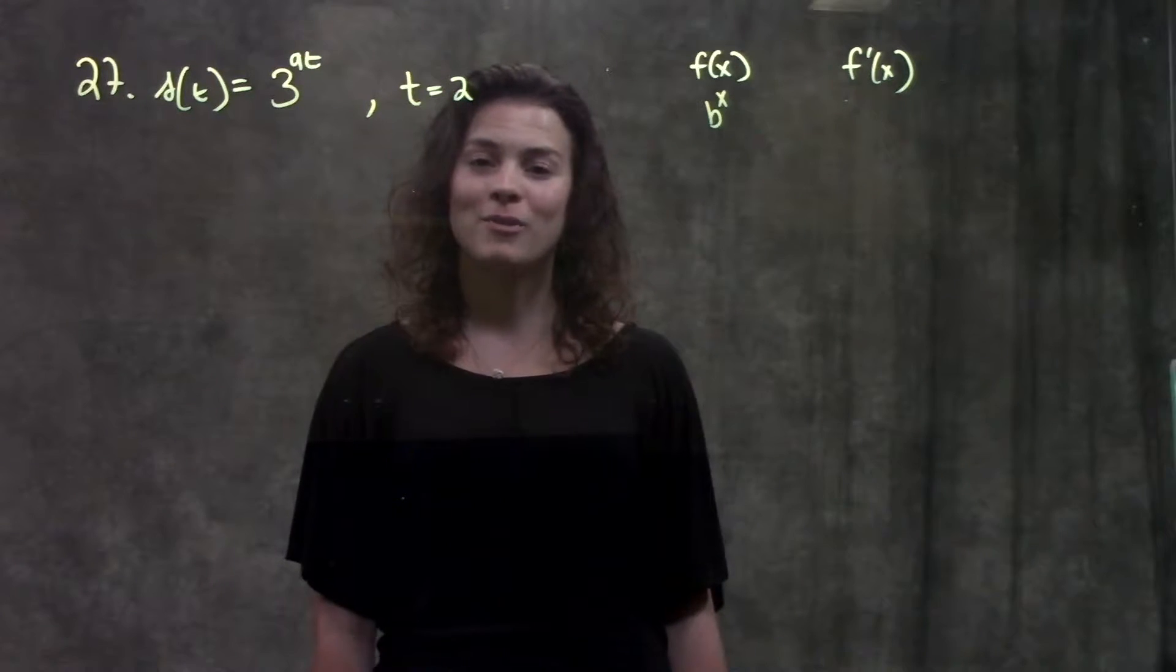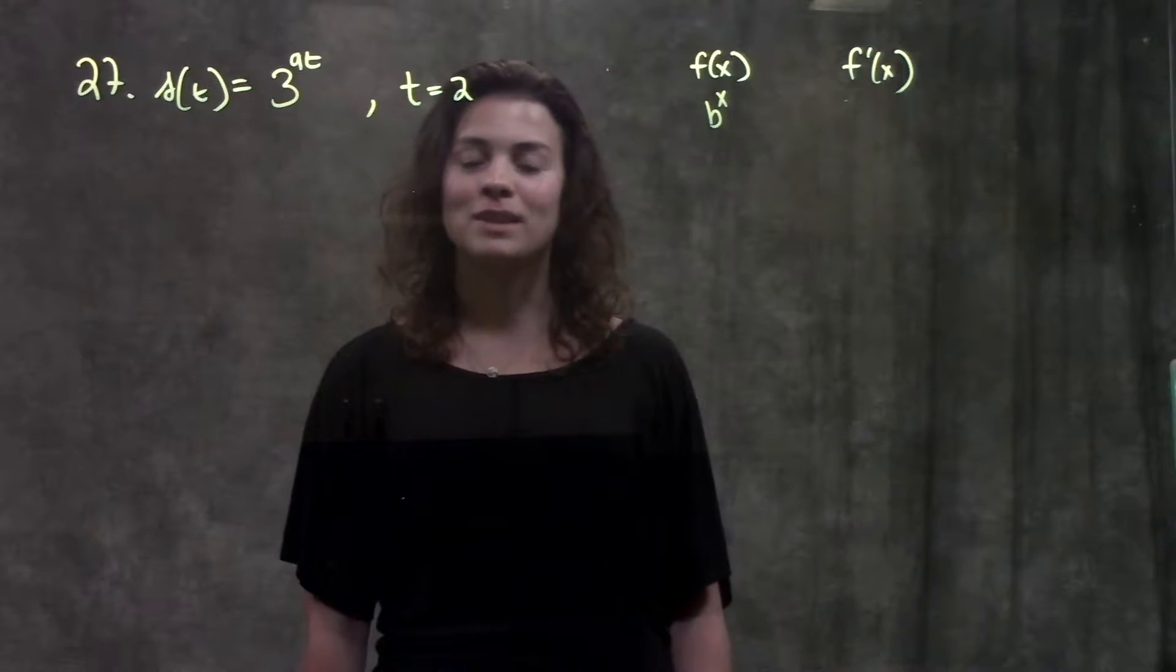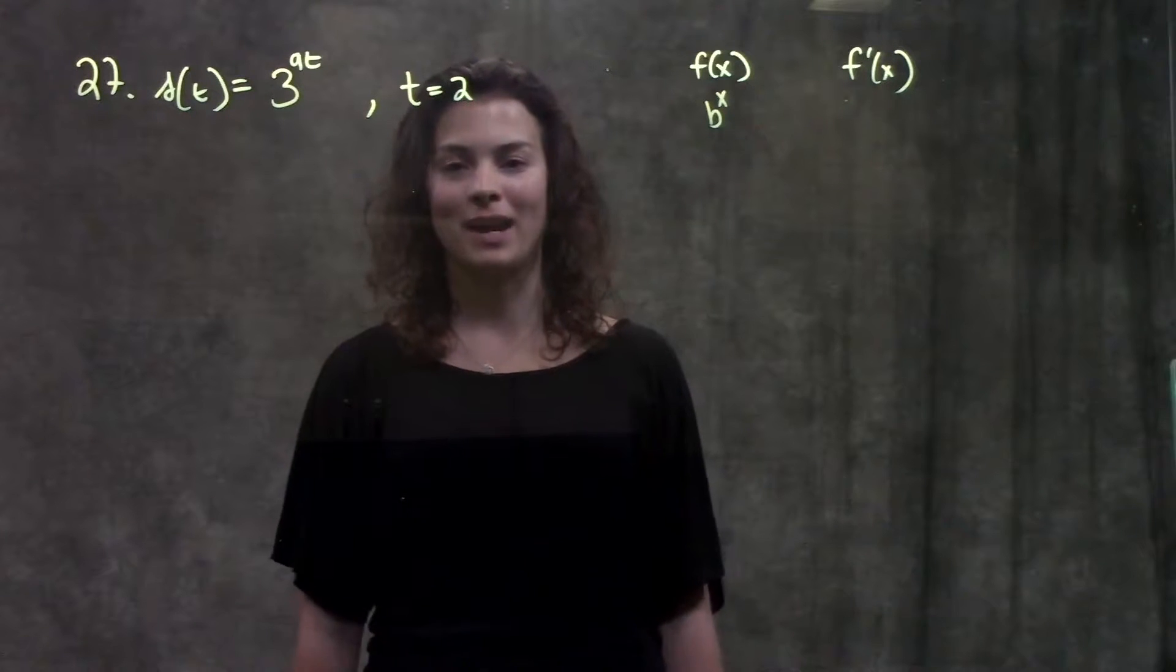Remember, whenever we're finding the equation of a line, we need two things: the slope and a point on the line.